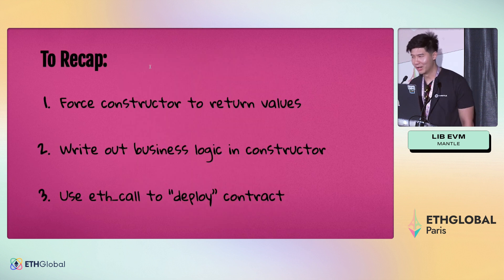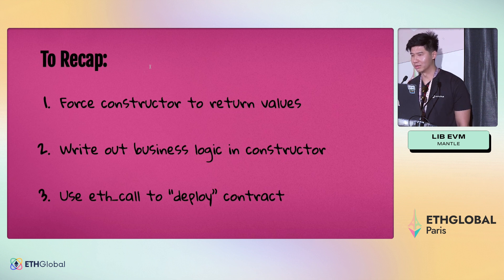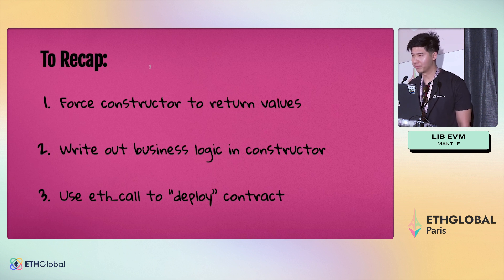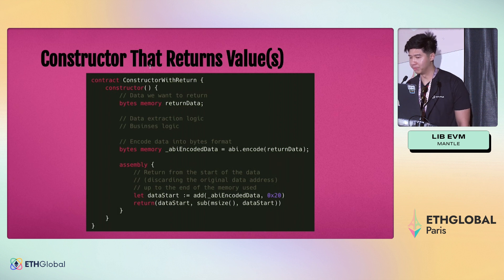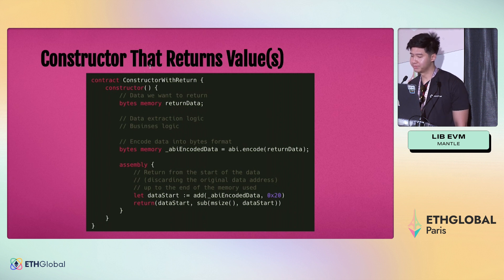Let me recap. One: we force the Solidity constructor to return values. Two: we write our business logic in the constructor — our arbitrary code. Three: we use ETH_call to quote-unquote deploy the contract, and upon deploying, the constructor executes the business logic and returns us the data because we've hijacked it to do so. This is how you force the constructor to return values: we go into assembly mode, perform our data extraction logic, ABI encode it, and write some assembly to force it to return the data.